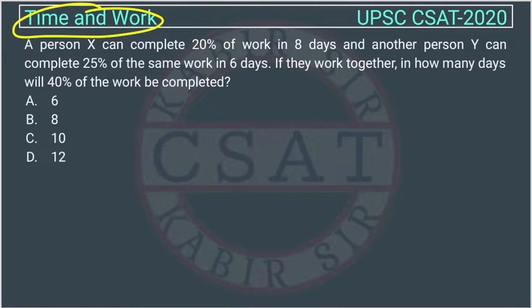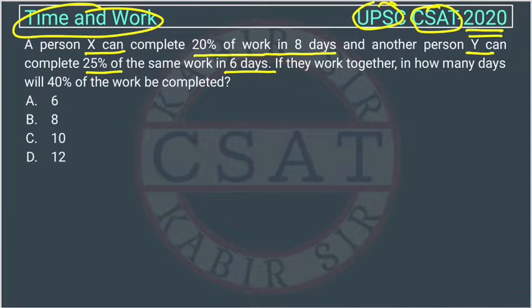This is a question of time and work asked by UPSC in CSAT paper of 2020. A person X can complete 20% of a work in 8 days and another person Y can complete 25% of the same work in 6 days. If they work together, how many days will 40% of the work be completed?